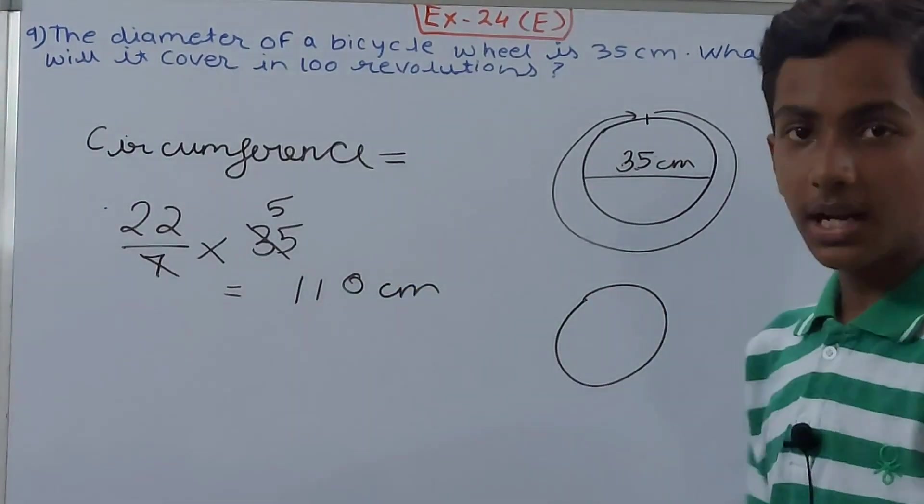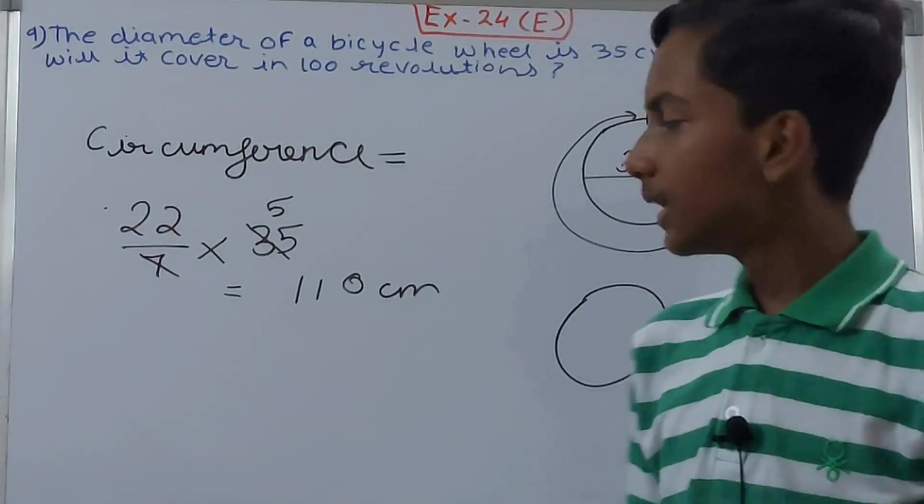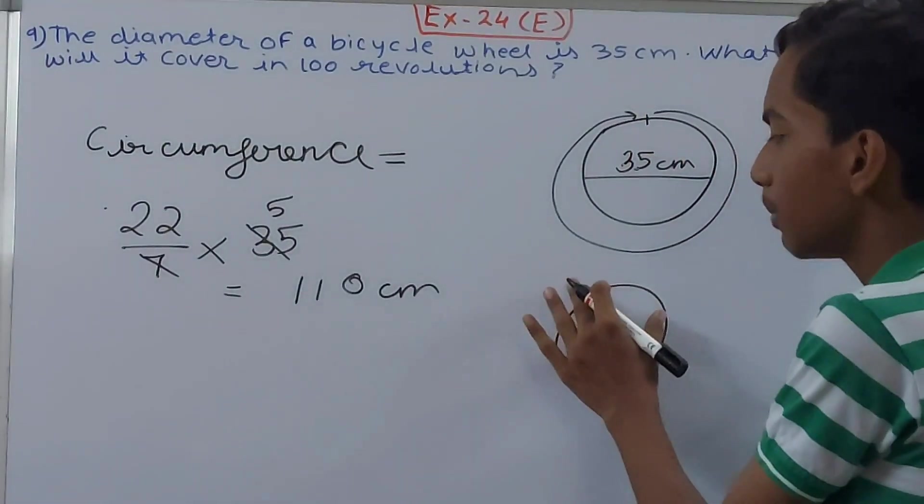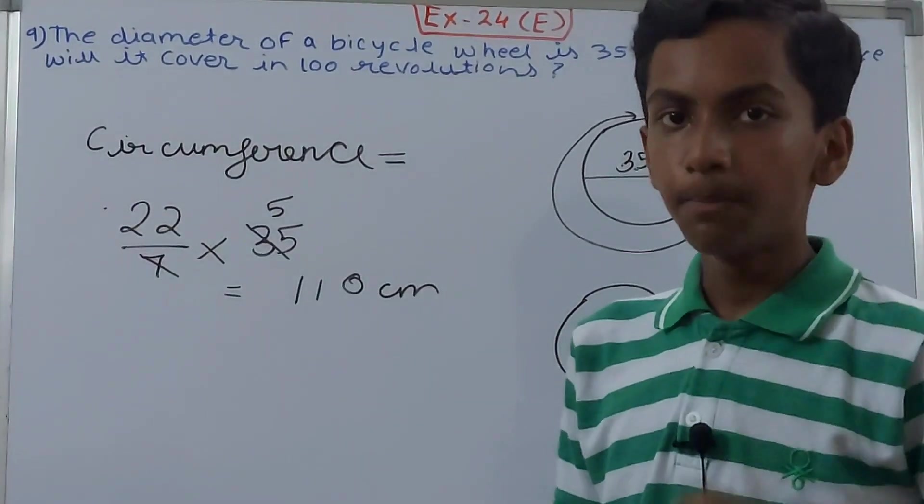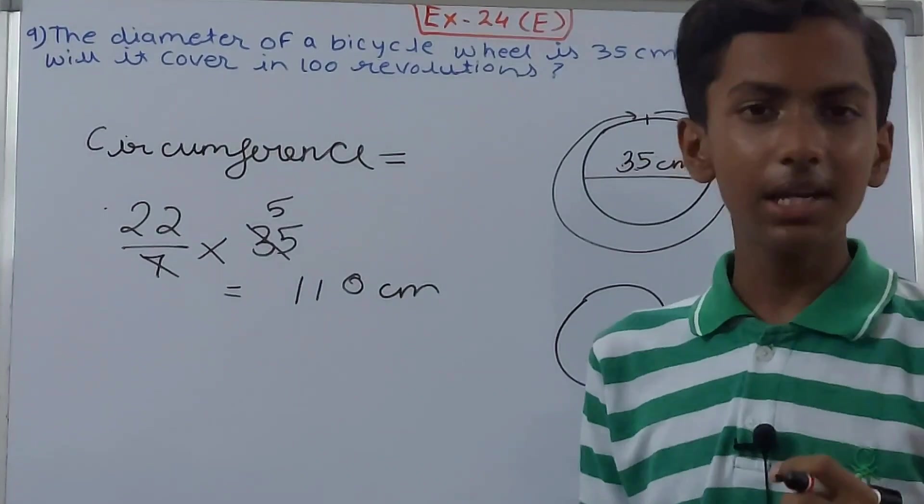If it spins one time, the total distance will be the circumference only. So if it's going to do the revolution 100 times, then what will the distance be?